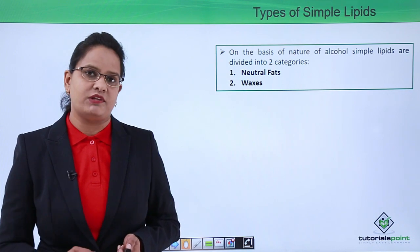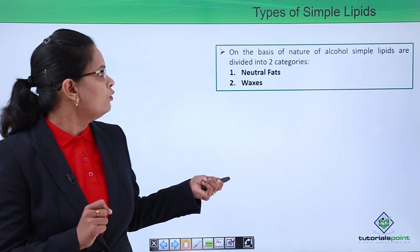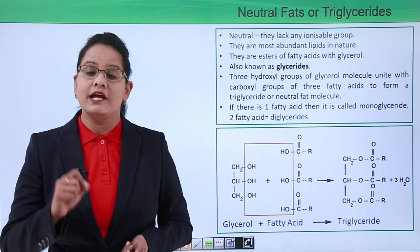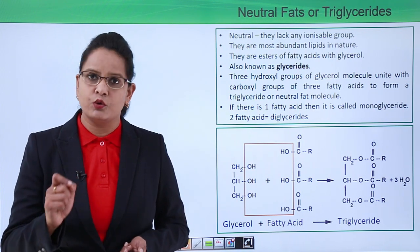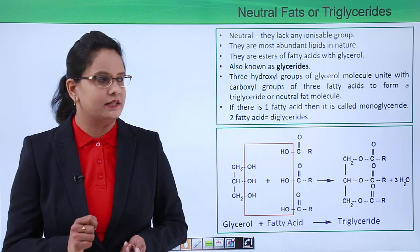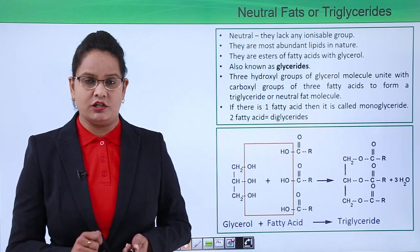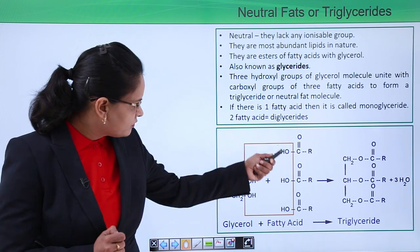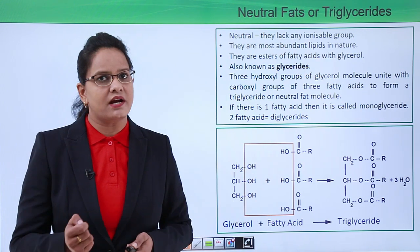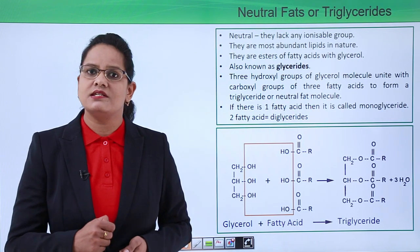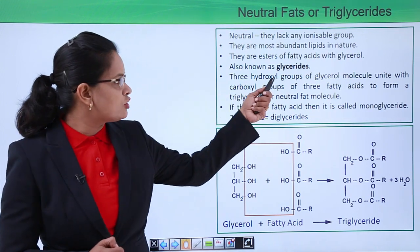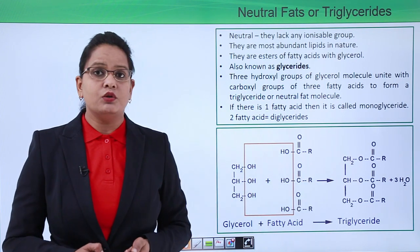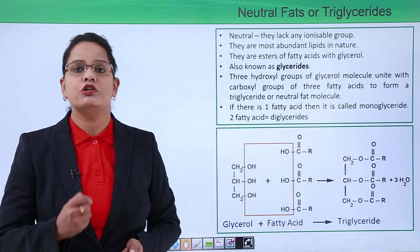First, the neutral fats. Neutral fat means that they are neutral in nature, meaning there is no ionizable group present in them, there is no charged group. They are the most abundant lipids in nature. They are simply one glycerol molecule combining with three fatty acids via the ester linkage. Three hydroxyl groups of glycerol combine with three fatty acids and the resultant molecule is neutral fat or a triglyceride.